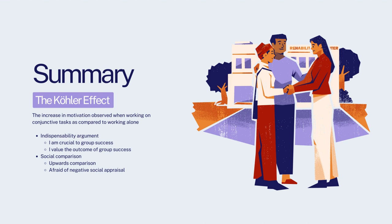In summary, the Kohler effect refers to the increase in motivation which is observed when people work on conjunctive tasks, as compared to working alone. This increase in motivation is due to the weaker team member perceiving their role as crucial to group success, valuing the outcome of group success, and comparing their abilities to the stronger team member. It can be applied in a range of situations where conjunctive task demands are present and where the psychological mechanisms are satisfied.